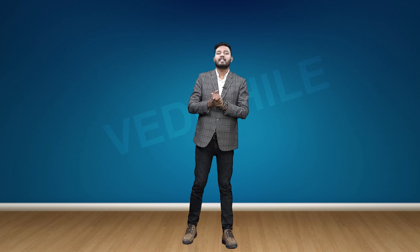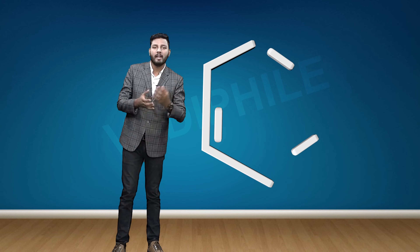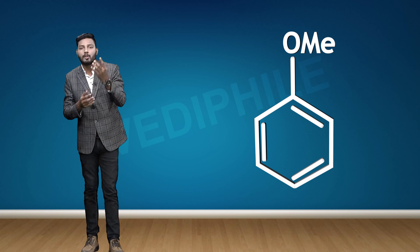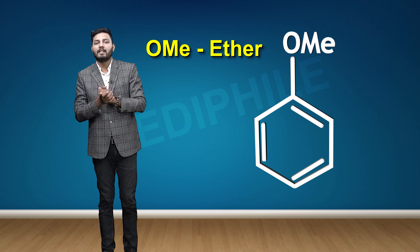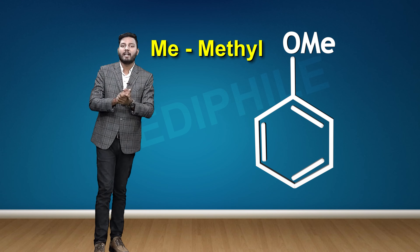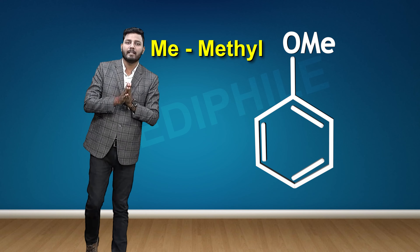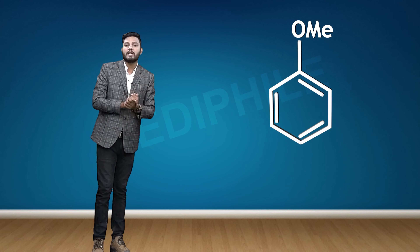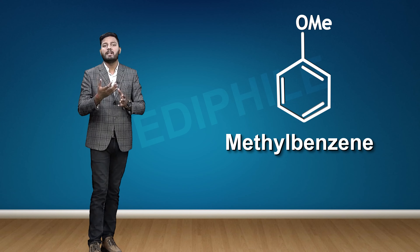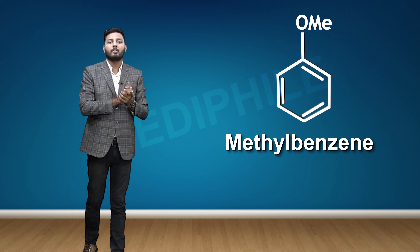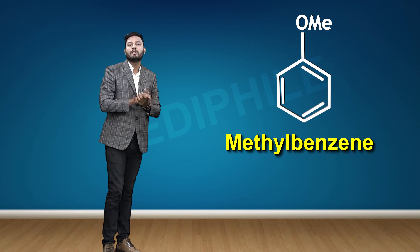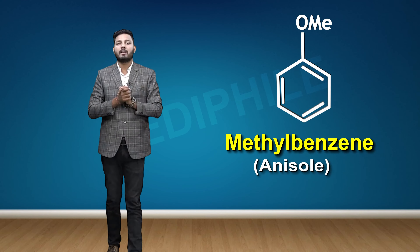In the next example, you can see that benzene has an OMe group attached. OMe is an ether functional group — O represents oxygen and Me represents a methyl group. So the name of this compound becomes methoxybenzene, because for ethers we always use the prefix form. The common name of methoxybenzene is anisole.